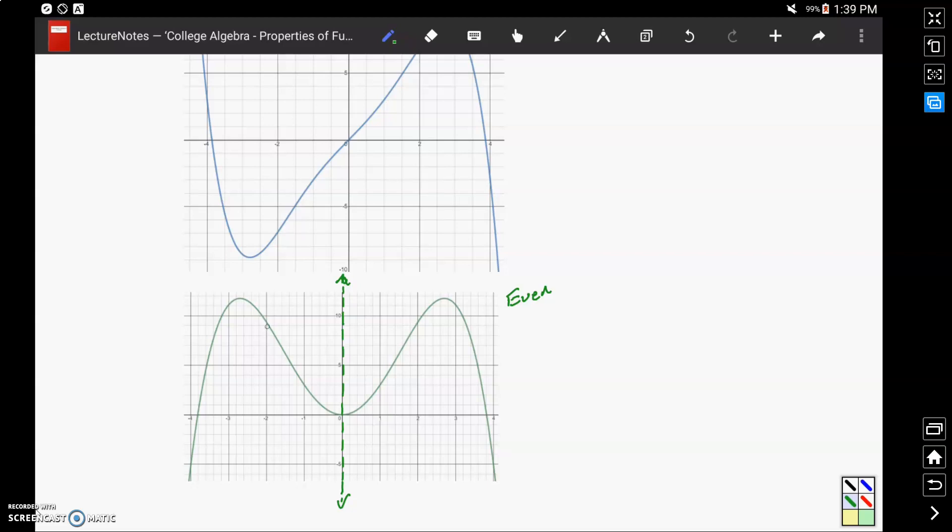If we want to look at identifying some specific points, for instance the point negative 2 comma 9, if we reflected that point across the y-axis equidistant from that line we would find the point positive 2 comma 9. So a perfect reflection over the y-axis.